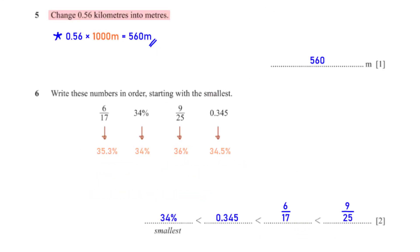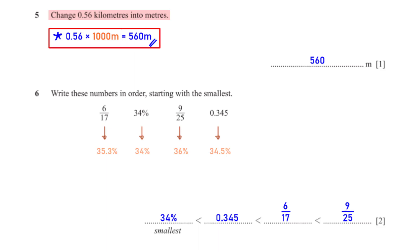Change 0.56 kilometers into meters. To convert 0.56 kilometers to meters, we multiply 0.56 by 1000. This gives us 560 meters.